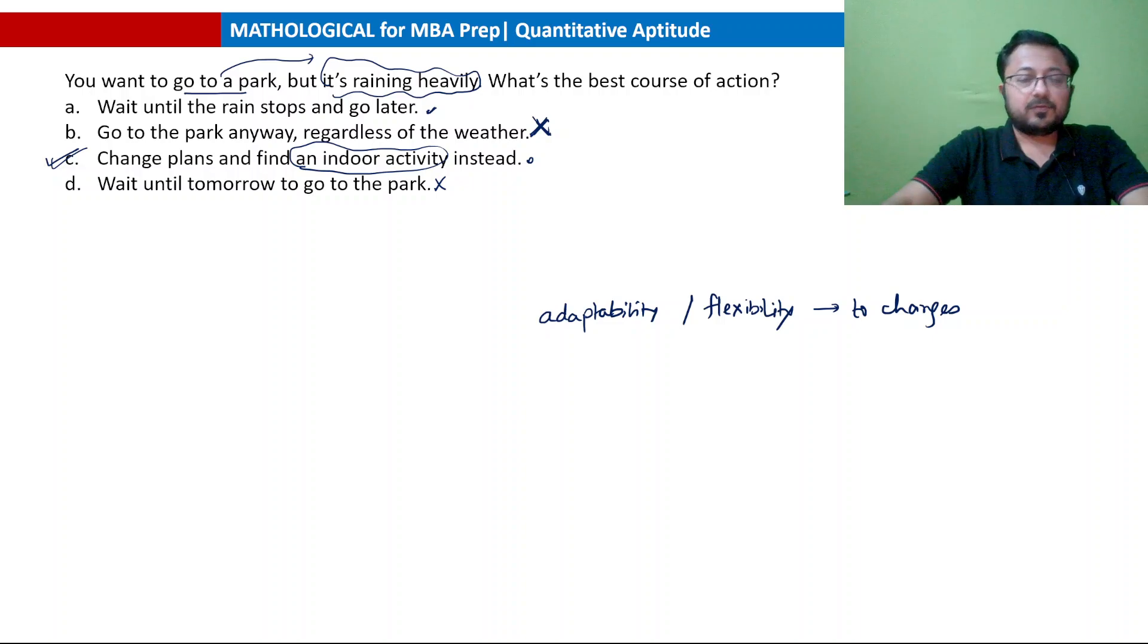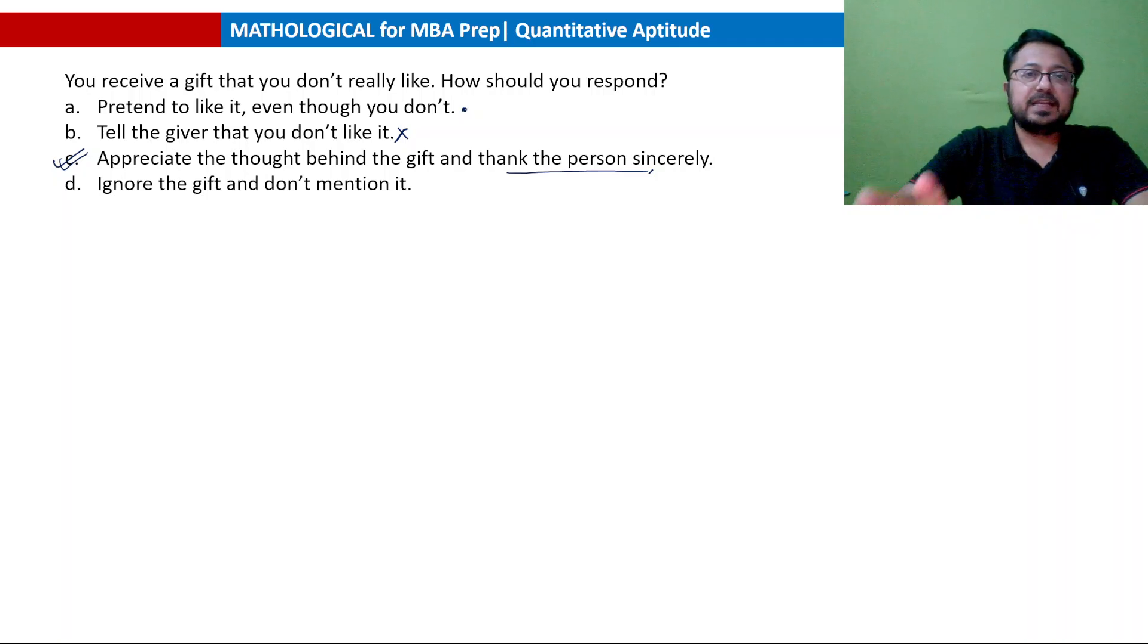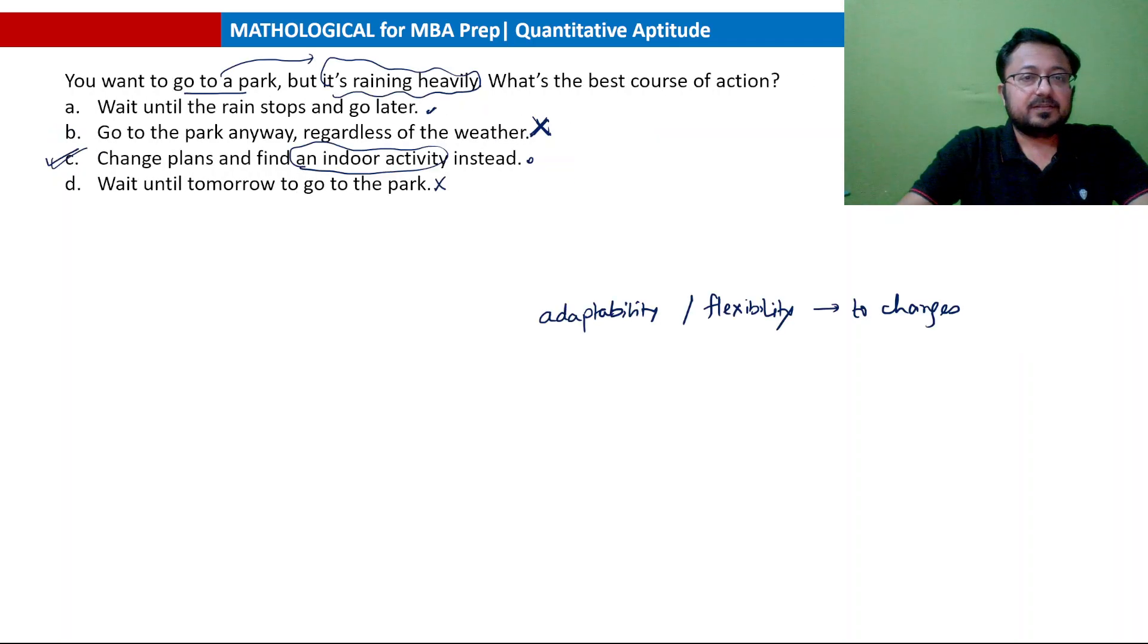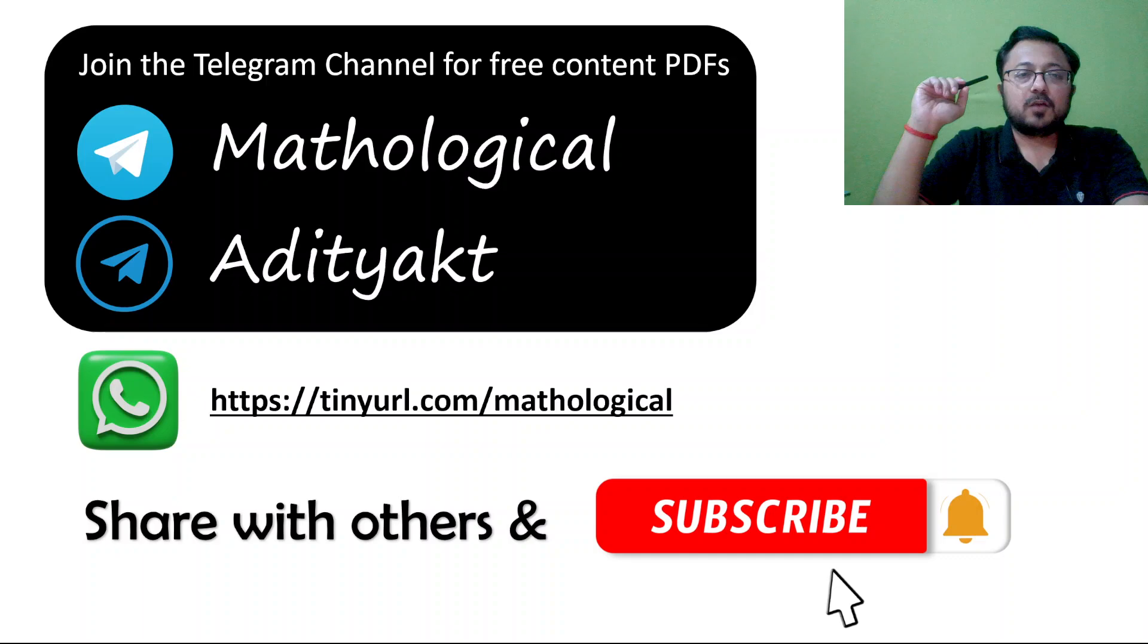These are all the questions from last year XGMT 2024 emotional quotient. I believe the approach is clear. In general, questions are easy. The only problem is the time that is given in the examination. You only have 30 to 40 seconds to tackle an emotional quotient question, and that is what makes it slightly difficult. That's all for this session. Next session we will be discussing some more emotional intelligence questions - not from previous years, but practice questions. Make sure to comment about that. If you liked the session, hit the like button. If you have not already subscribed to the channel, then subscribe and press the bell icon. You can also join the Telegram channel Methodological and message me on Telegram at adityakt. Bye, take care and keep learning.